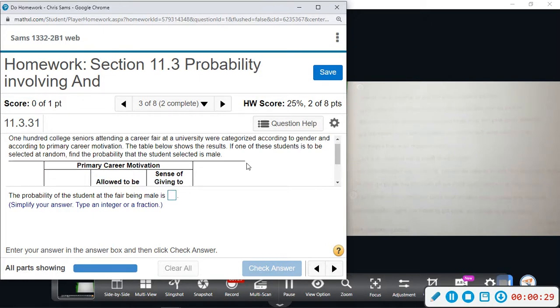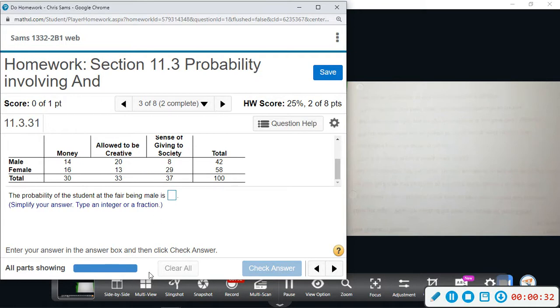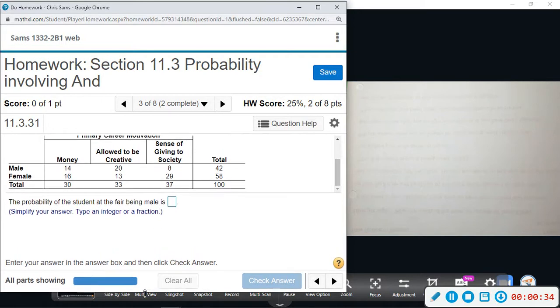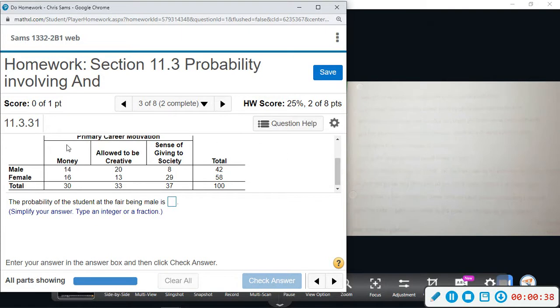Alright, so this is what we call a two-way table. It's called a two-way table because it gives you two ways of looking at data. So over here it's grouped by male and female. Total number of males is 42, total number of females is 58, and all together there's 100 people.